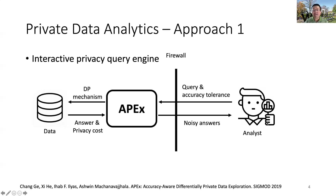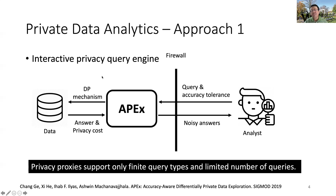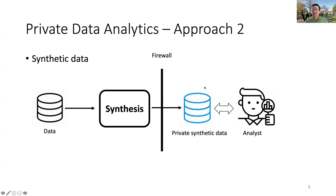One popular approach for private data analytics is to set up a privacy query engine between the data and the analyst. For example, my previous work APEX automatically ensures this interactive query answering satisfies differential privacy and meets accuracy requirements. This approach allows fine tuning between accuracy and privacy for a finite set of query types, and since every query consumes some of the privacy budget, the analyst can only ask a limited number of queries.